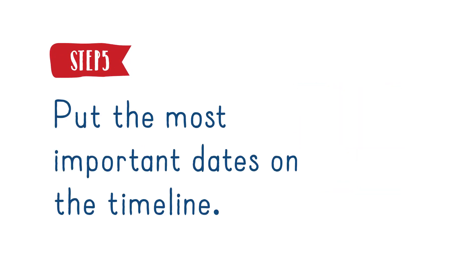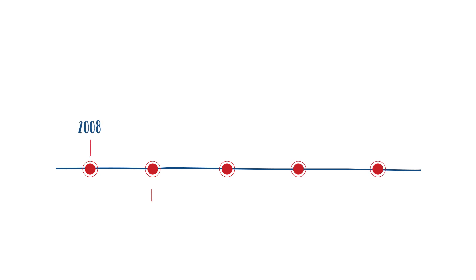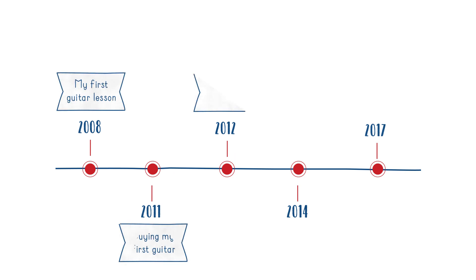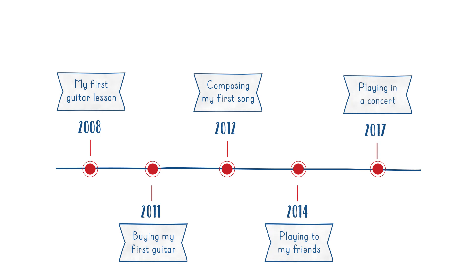Step 5: Put the most important dates on the timeline. Go along the line and mark the spots where the events will go. Draw a line that is perpendicular to your main timeline to show the years in which the events occurred. Next, write down a short description of each one. Organise the dates sequentially — the events need to be on the timeline in chronological order, not in order of importance or interest.